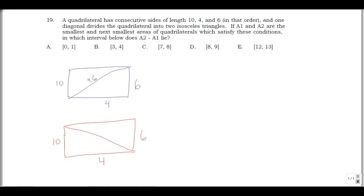Let's write down the possibilities. Going through this diagonal — we have a 4, a 6, a 10. Suppose we put a 4 on that diagonal. Then for the upper left triangle to be isosceles, the top side has to be either 4 or 10. But if it were 4, we'd have 4, 4, and 10 in a triangle — but 10 is longer than the sum of the other two sides, which is impossible. So we must put a 10 there.